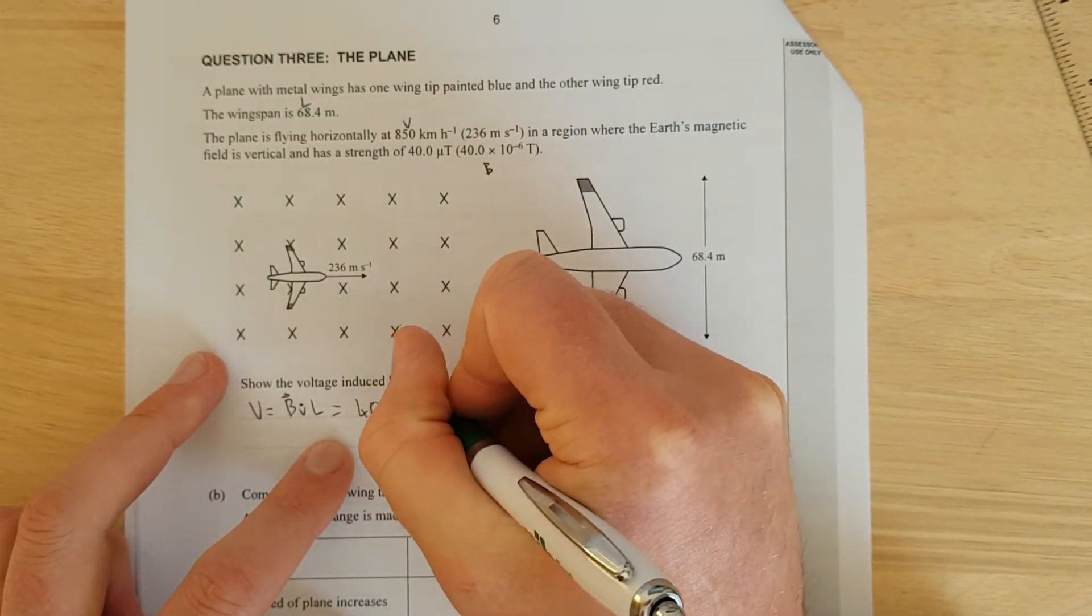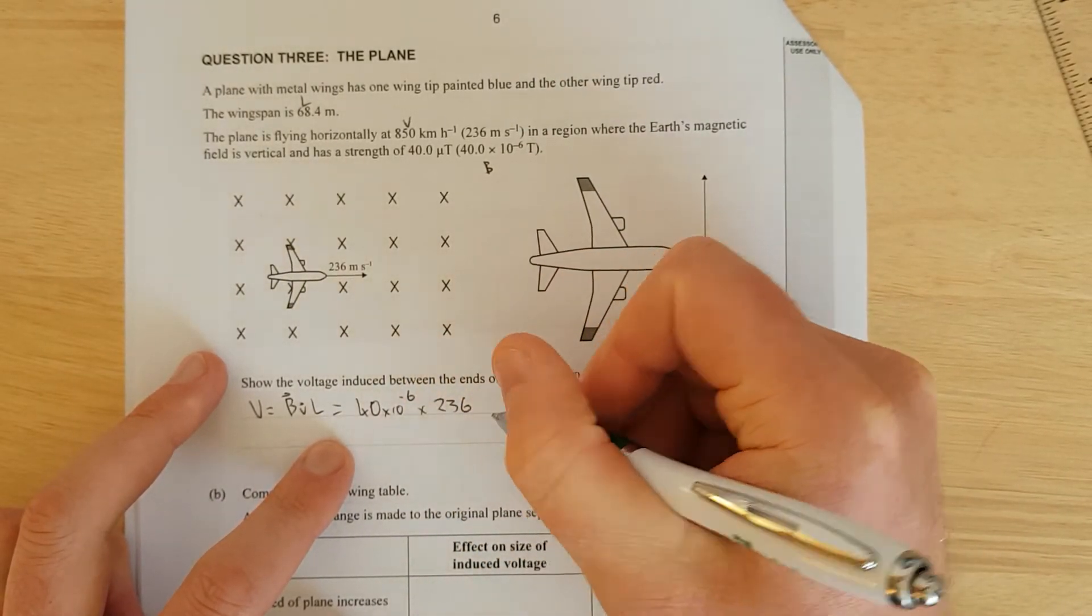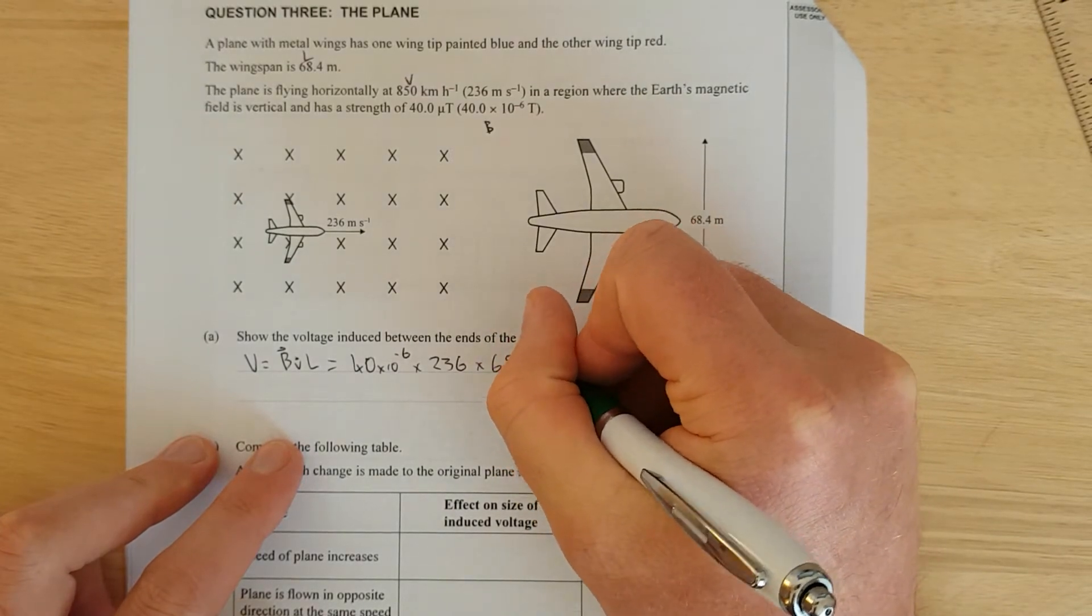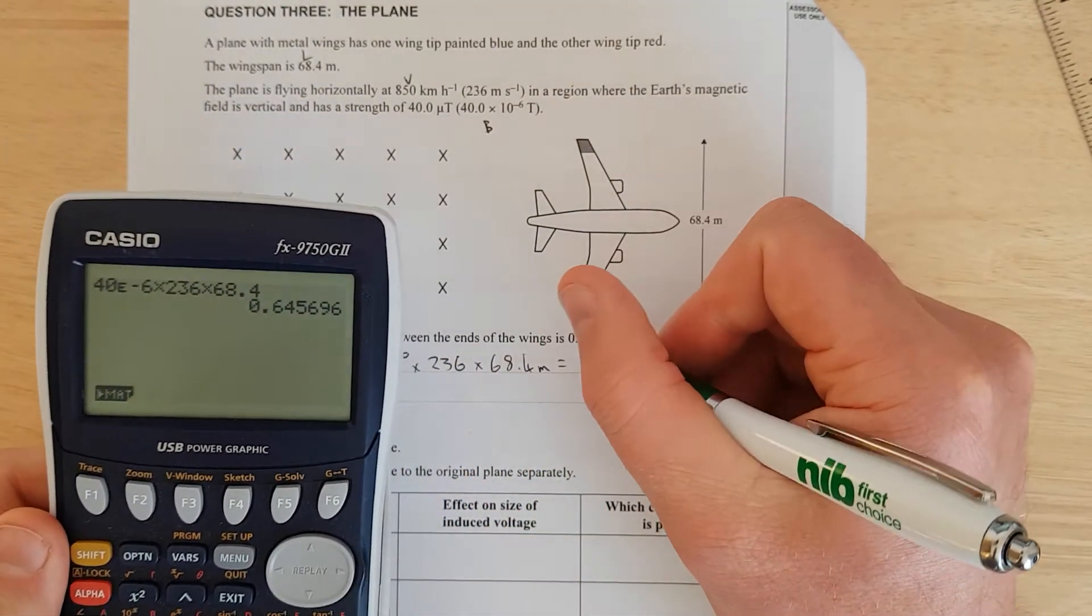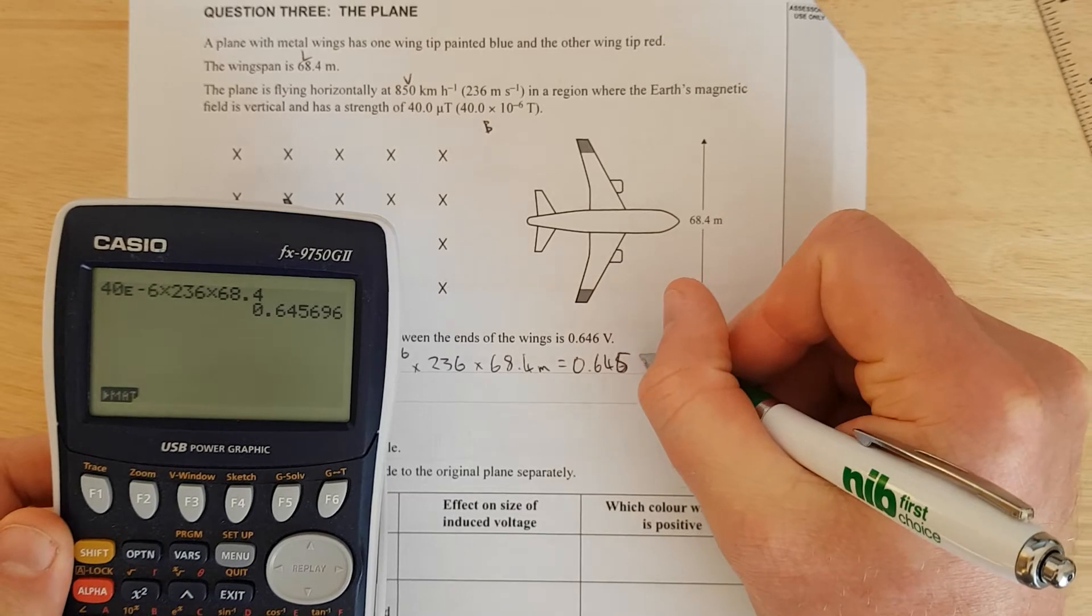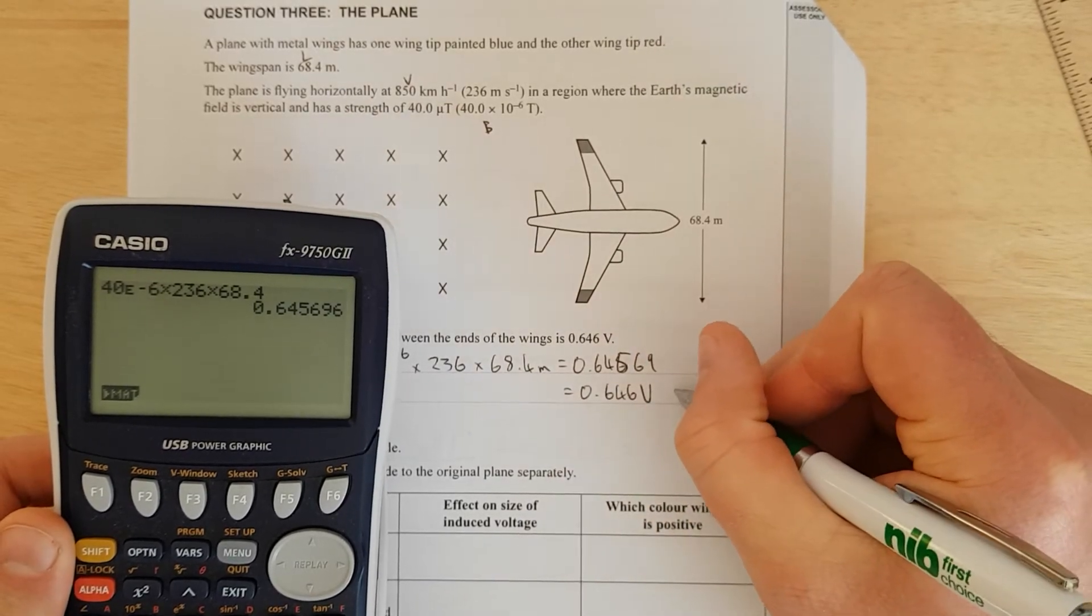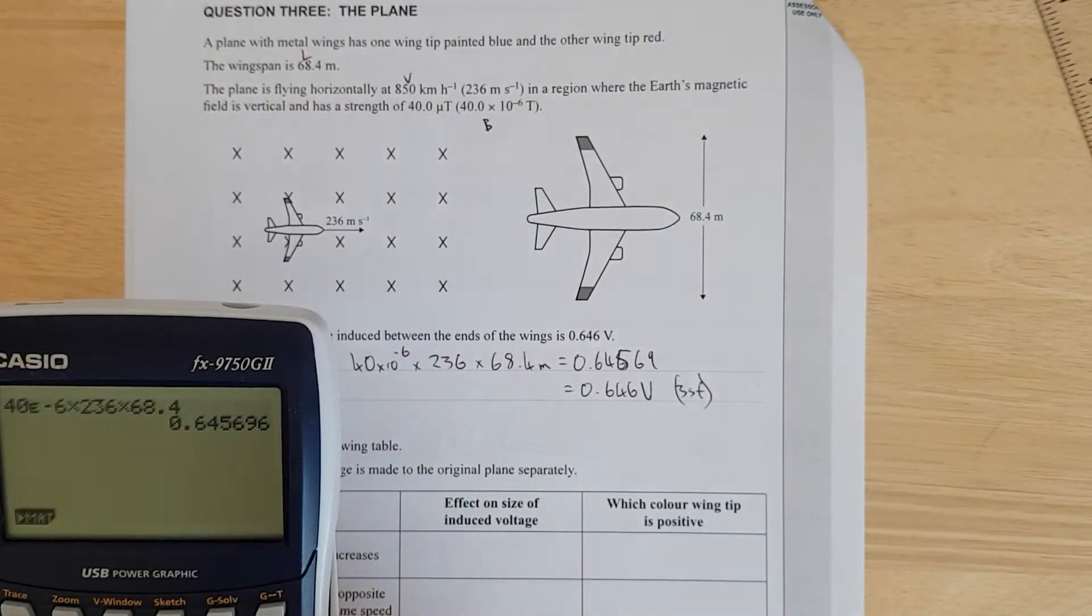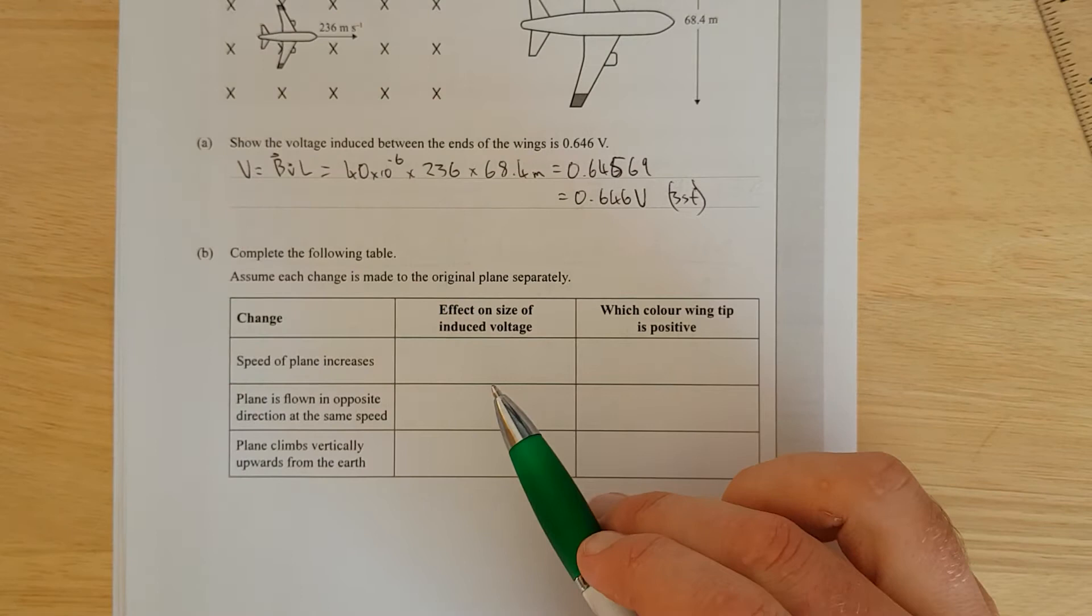40 times 10 to the negative 6, times velocity is 236 meters per second because you have to use SI units, and the length is 68.4 meters. That equals 0.645696, which equals 0.646 volts to 3SF. So we can use 3SF, otherwise they haven't done it to the correct significant figures.